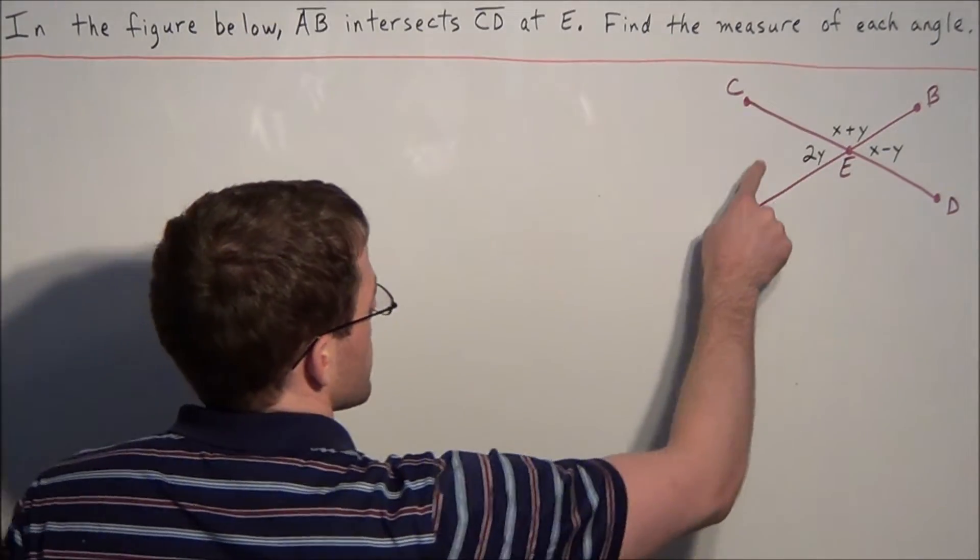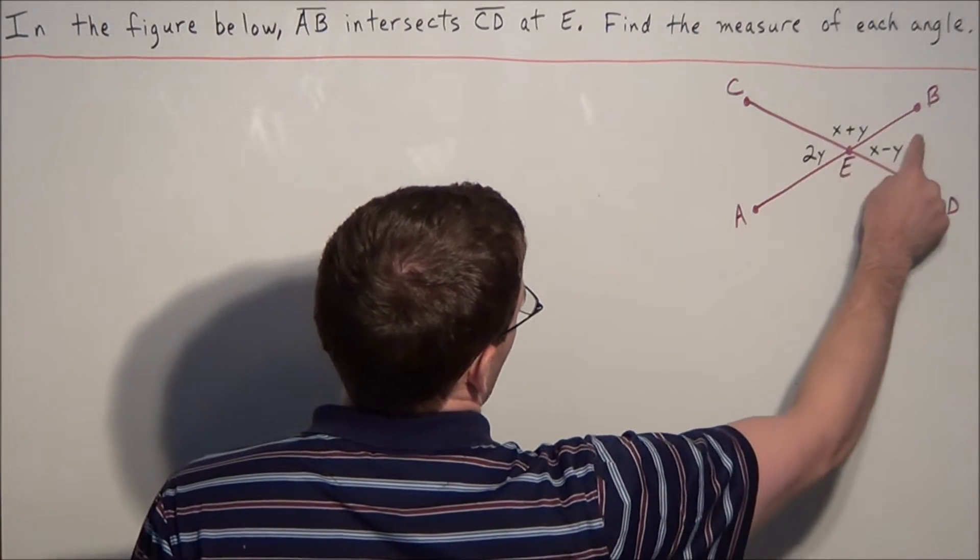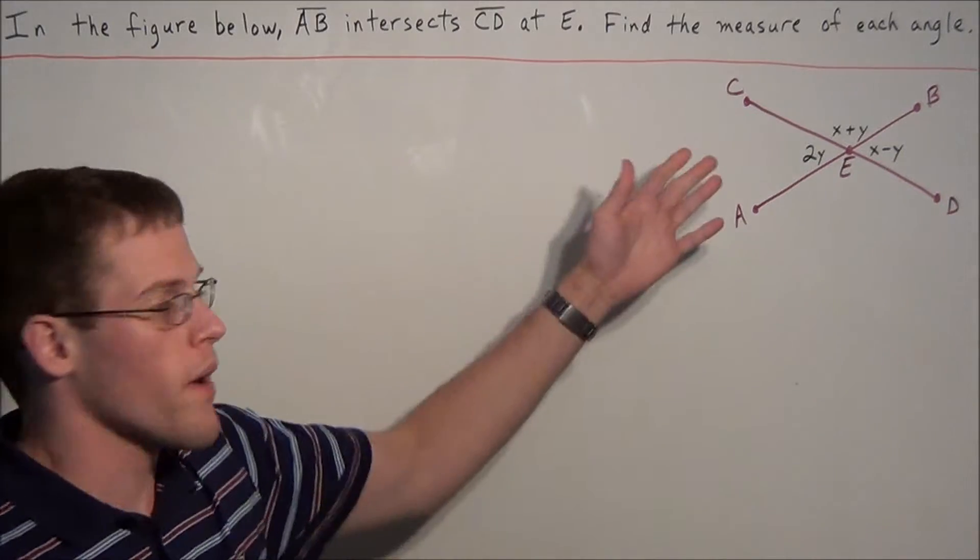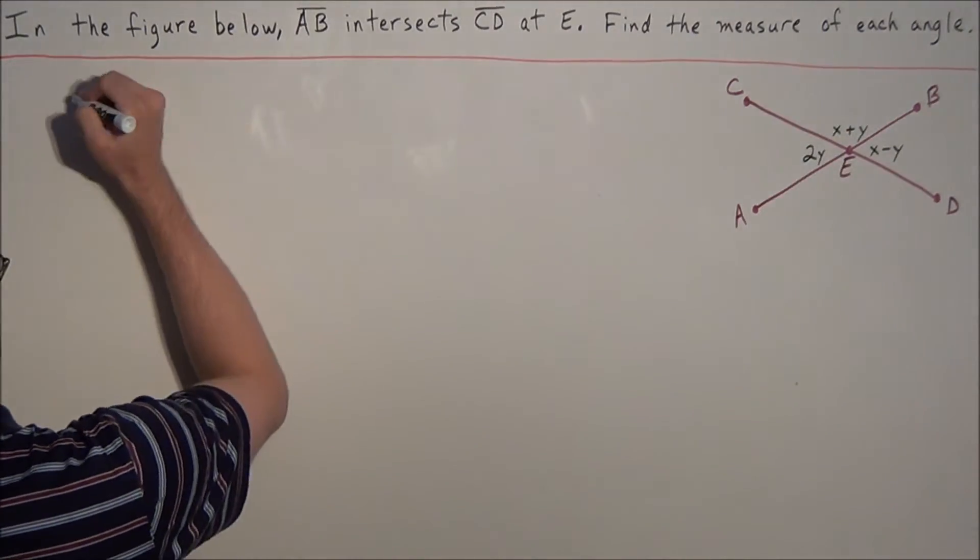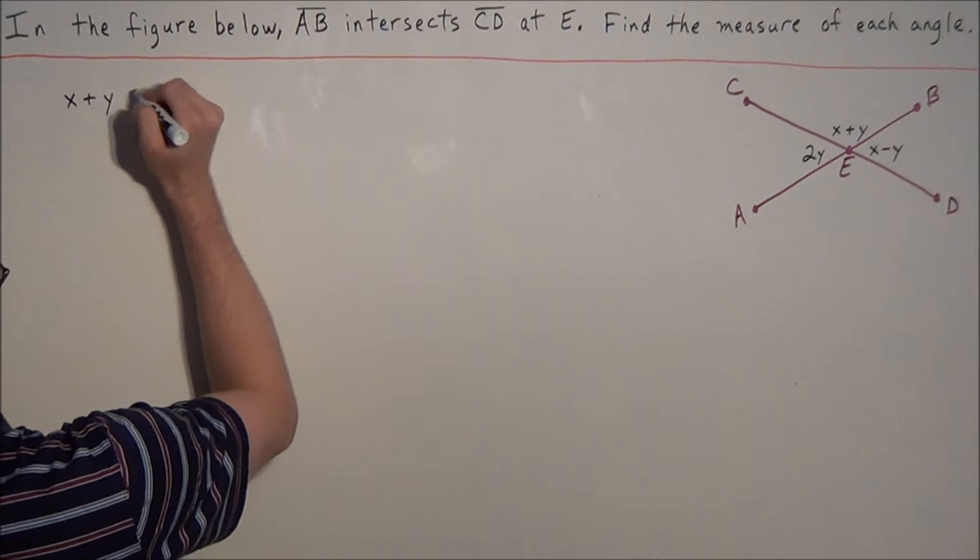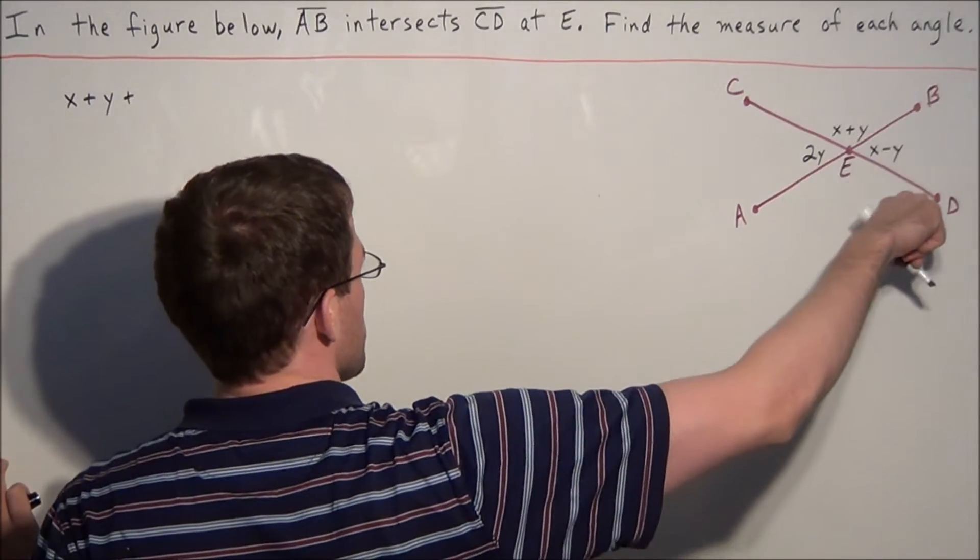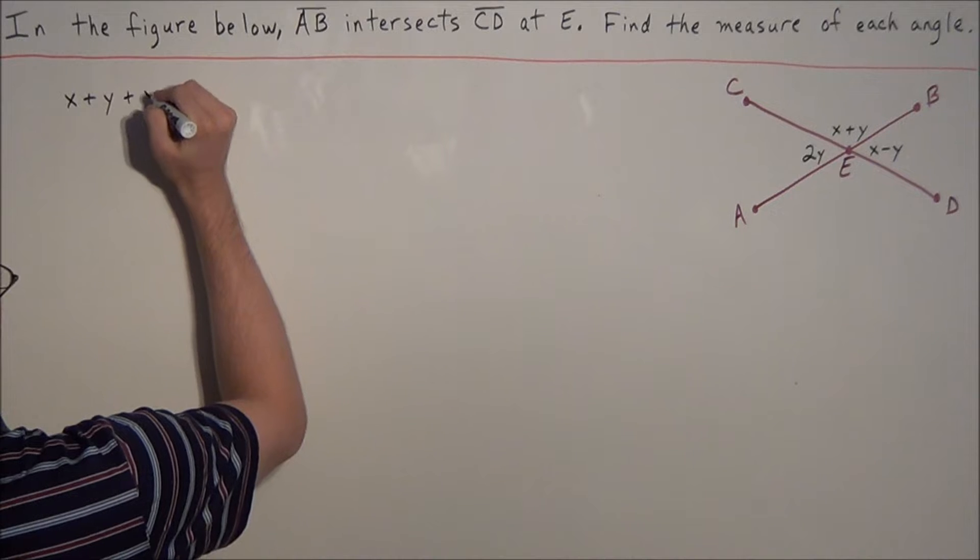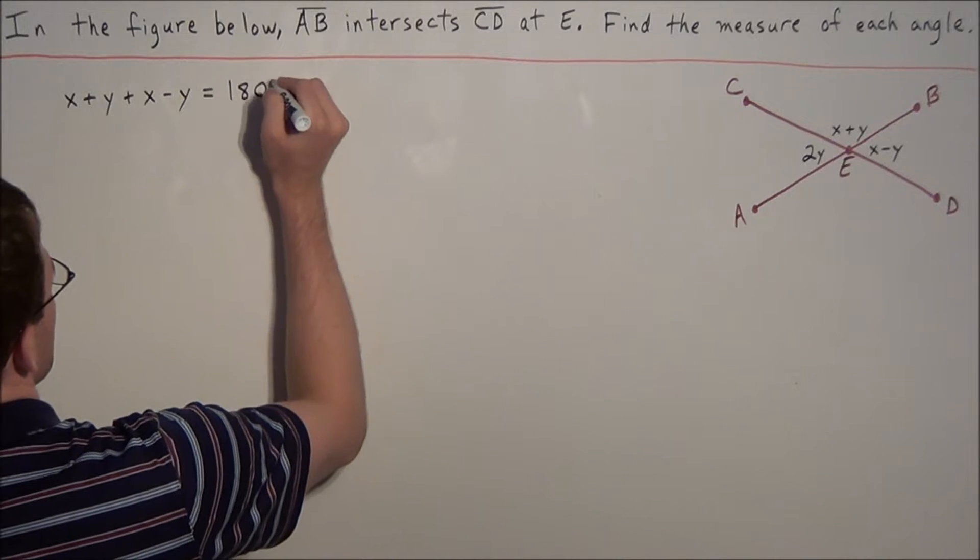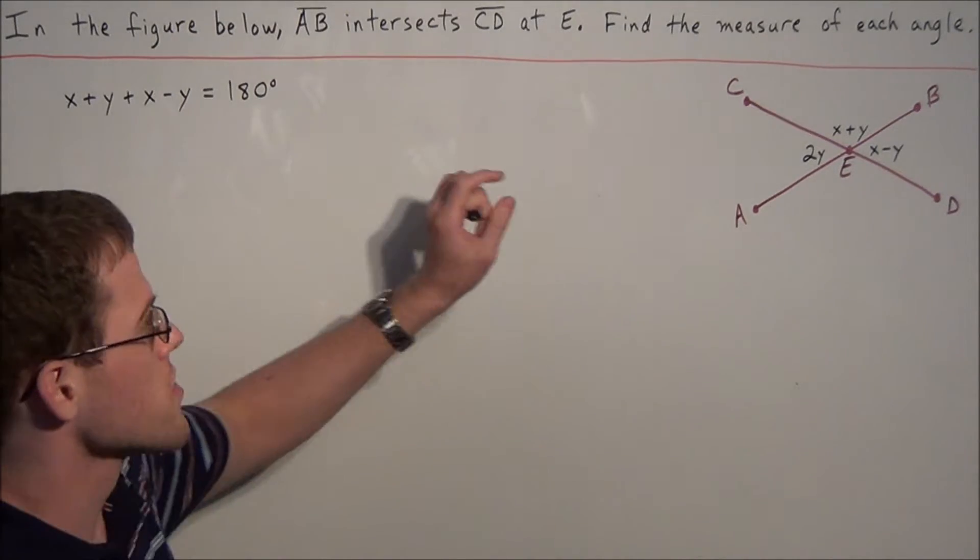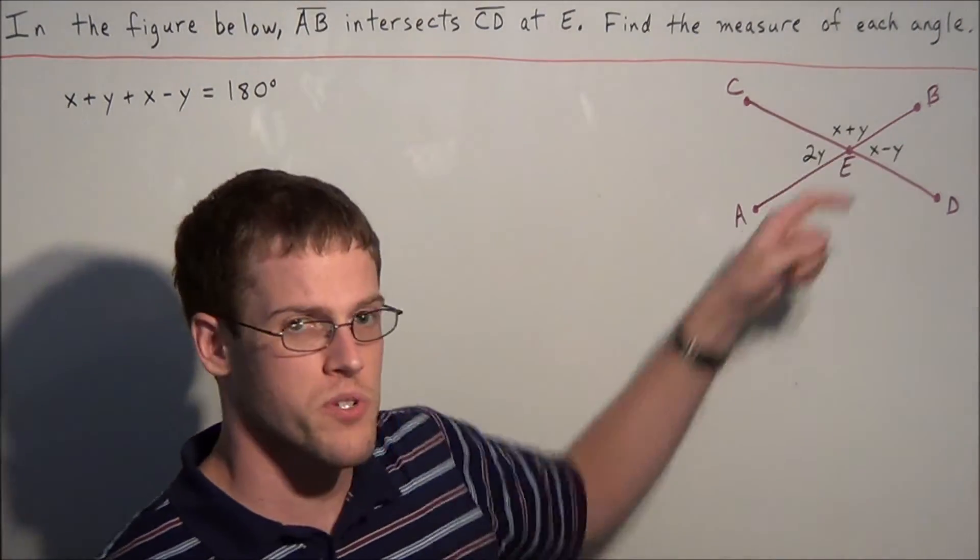The first thing we want to focus on is angle CEB and angle DEB. Those two angles form a straight line, so they are supplementary. This allows us to set up an equation: X plus Y plus X minus Y equals 180 degrees, because the sum of two supplementary angles will always equal 180 degrees since they form a straight line.